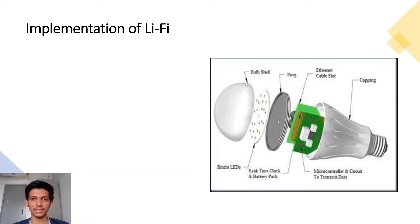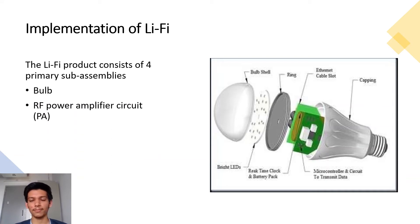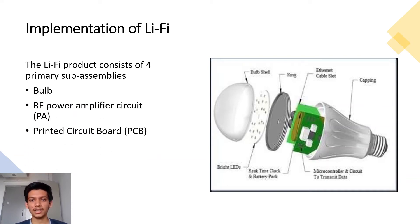Li-Fi is implemented using four primary sub-assemblies: first is the bulb, second is the RF power amplifier circuit, third is the printed circuit board or PCB, and fourth is the enclosure. You can understand this in advance from the given figure.